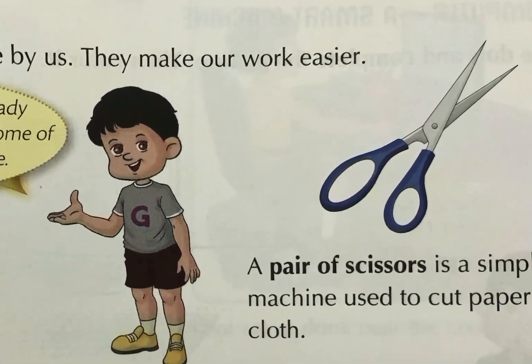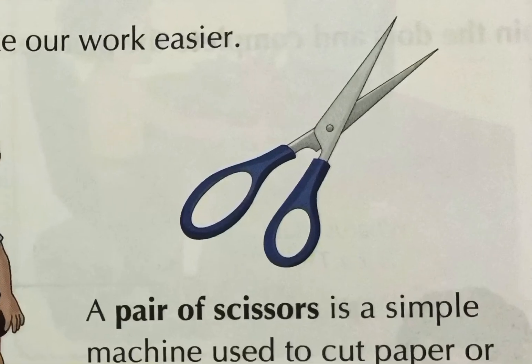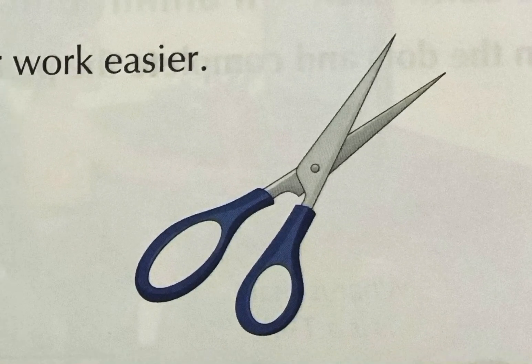For example, a pair of scissors is a simple machine used to cut paper or cloth. A pair of scissors is made up of two blades and we cut paper with a pair of scissors.